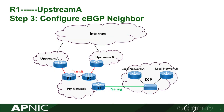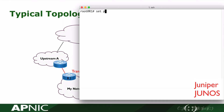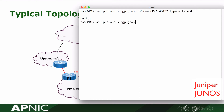In step 3, we will configure the eBGP neighbor between R1 in my network and the border router of upstream A. Going to the protocol's BGP, define this group. The group name is IPv6-eBGP-AS45192. The type is eBGP neighbor. The remote AS number is 45192.